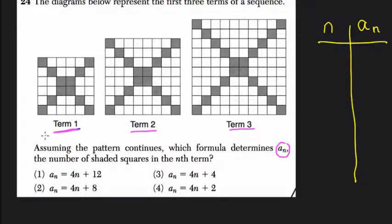In term 1, n equals 1. That's our first term. A sub 1 would be the number of shaded boxes in the first term. A sub n is the number of shaded boxes on any term in the sequence, the formula for any amount of shaded boxes. A sub 1 is the specific amount of shaded boxes that are in the first term, when n equals 1. You just plug in the value for n into this little subscript right here.